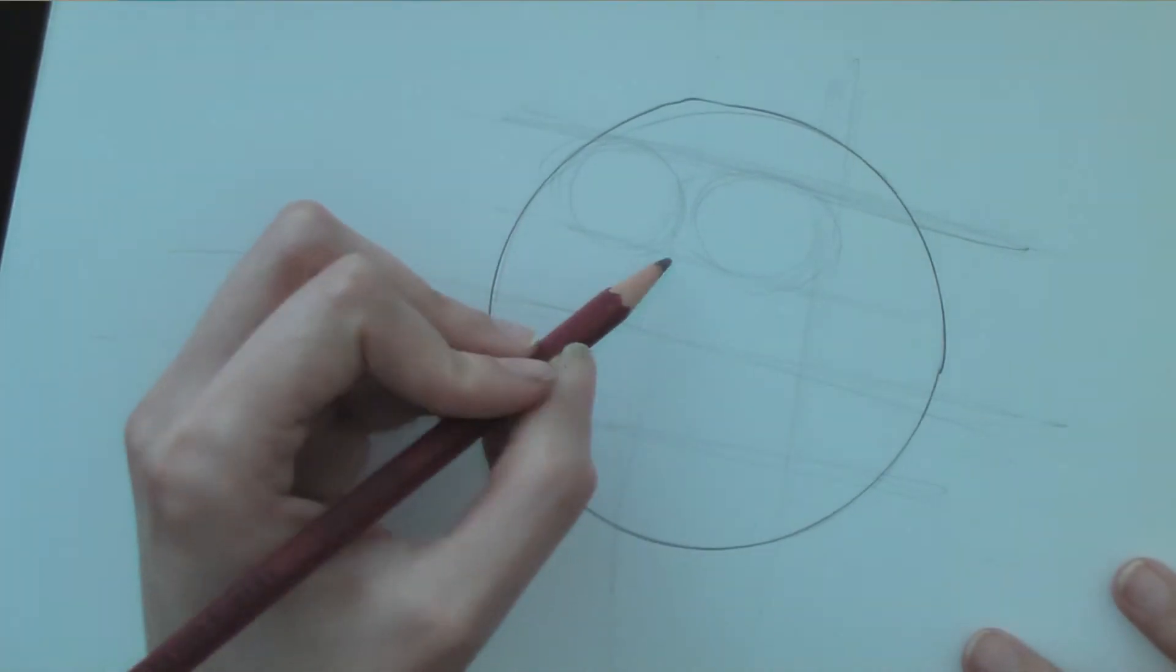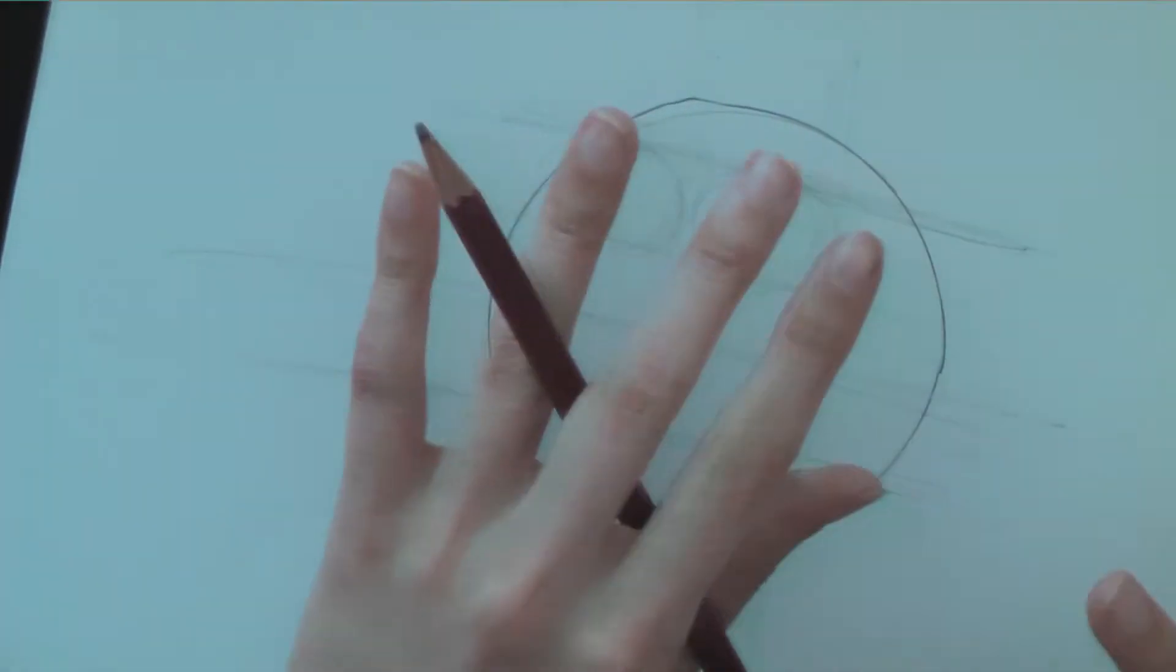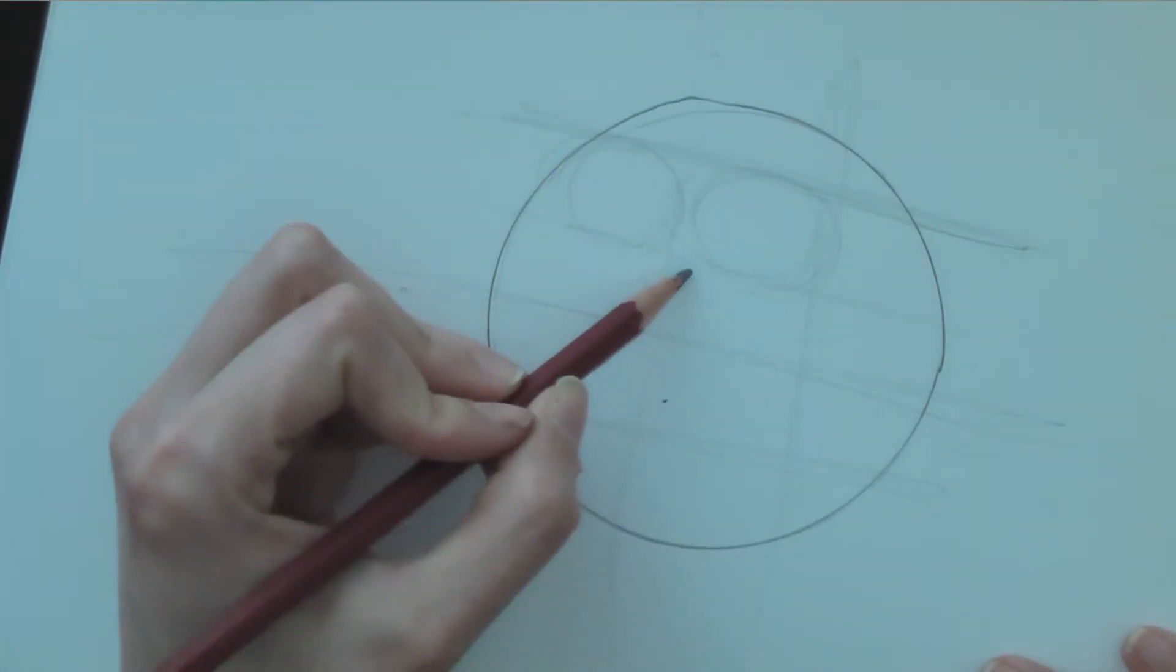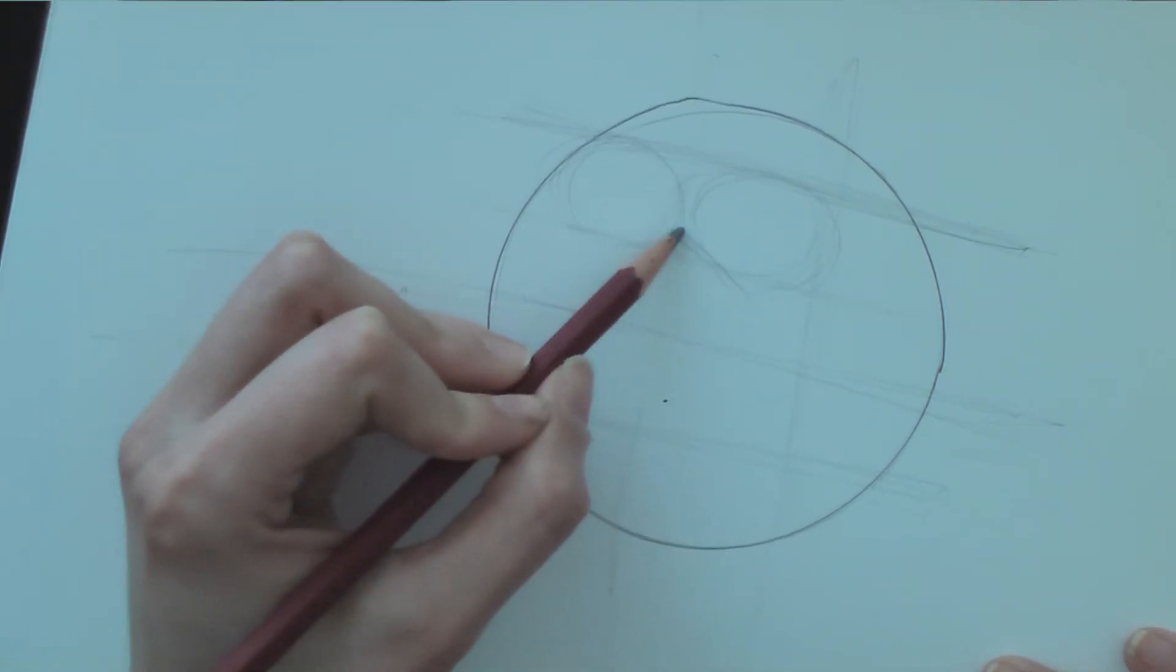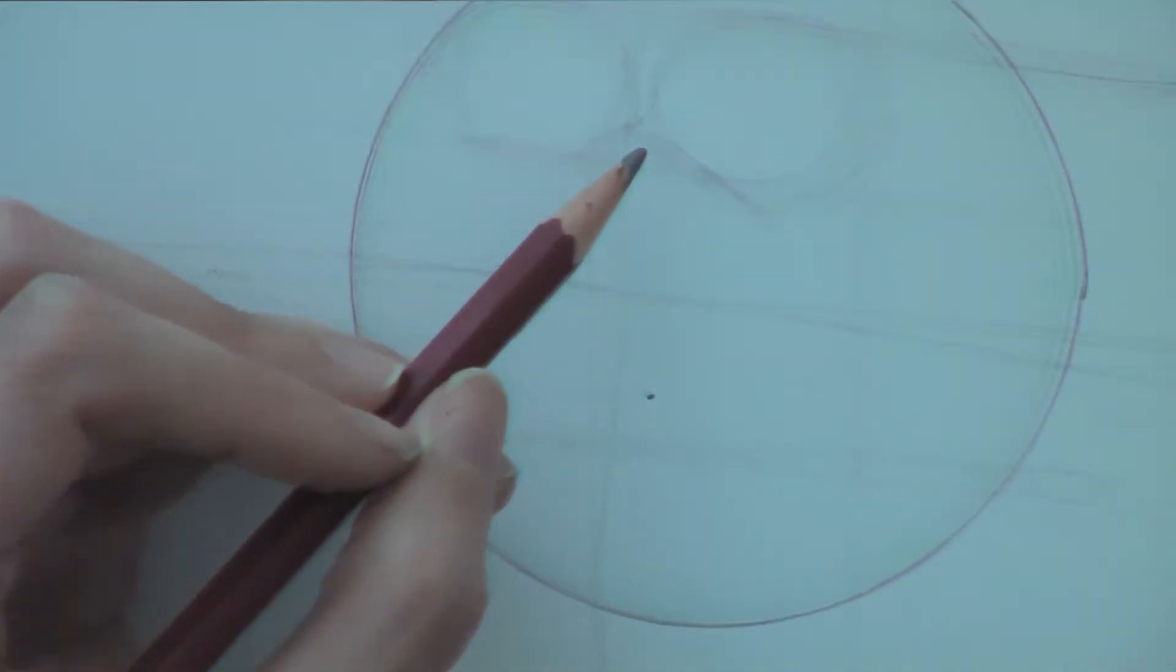And then I'm going to do the beak now. So this is going to be the eyes. We'll get to that later. Just leave them as little circles. So I'm going to do the beak. And go up here. And bring this line right here.